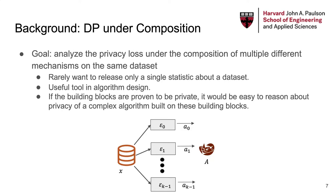One of the most important properties of differential privacy is that it permits the analysis of cumulative privacy loss under the composition of multiple mechanisms. If we run multiple distinct differentially private algorithms on the same dataset, the resulting composed algorithm is also differentially private, with some degradation in the privacy parameters epsilon-delta. This property is especially important in practice, where we rarely want to release only a single statistic. Composition is also a useful tool in algorithm design, as new DP algorithms are often created by combining simpler algorithms.